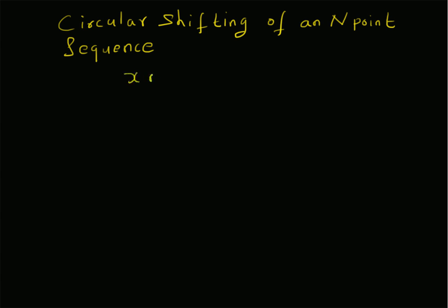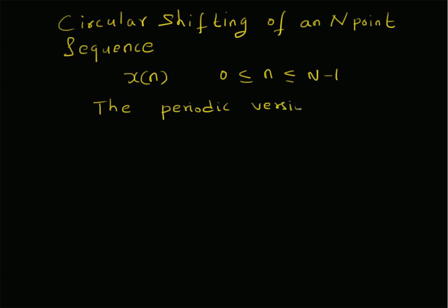Consider an N-point sequence x(n) with N values, that is, the value of n is between 0 and N minus 1. The periodic version of x(n) is xp(n), which is by definition the summation with l equal to minus infinity to plus infinity of x(n minus lN). That is, xp(n) is a periodic repetition or periodic extension of x(n). In terms of DFTs, note that the DFT of x(n) and the DFT of xp(n) are identical.